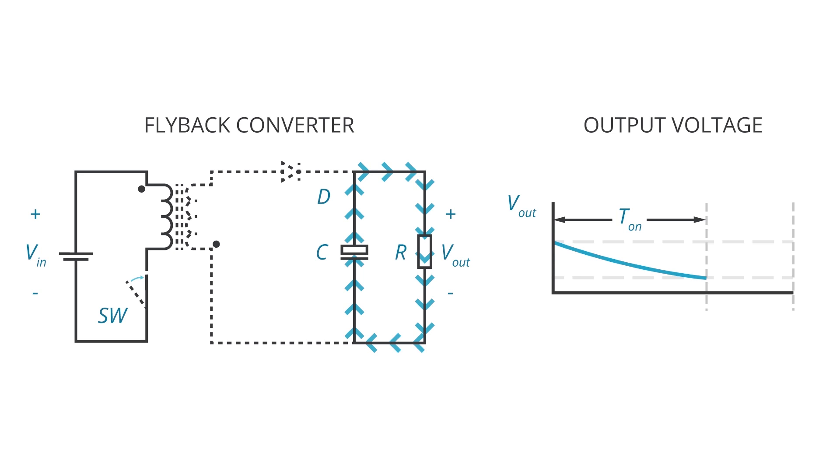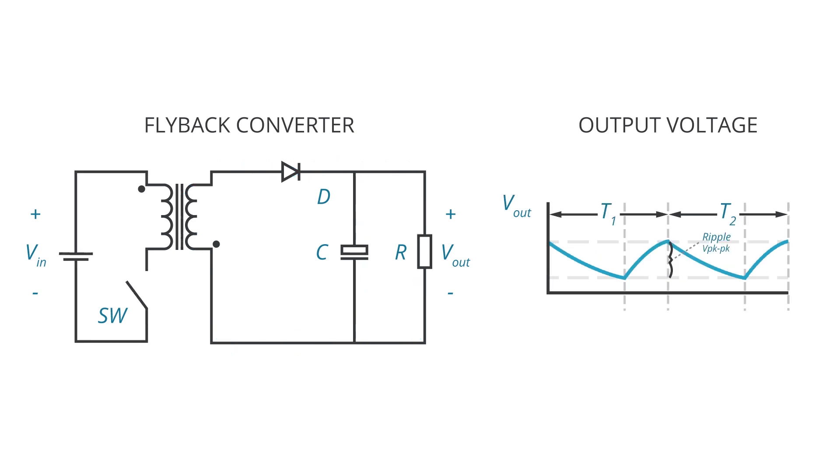During this time, the output voltage will fall as the capacitors discharge. In the other half of the cycle, energy stored in the transformer is transferred to the output, supplying both the load and recharging the output capacitors. During this time, the voltage will rise until the cycle repeats.